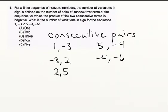So now we have to worry about what the product is. The product here is 1 times minus 3, or minus 3. The product here is minus 3 times 2, or minus 6. The product here is 2 times 5, or 10. The product here is minus 20. The product here, minus 4 times minus 6, is plus 24.